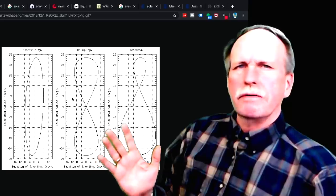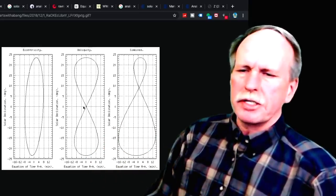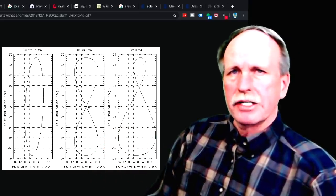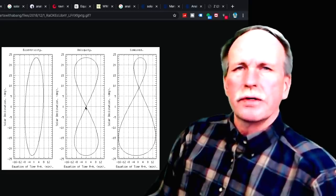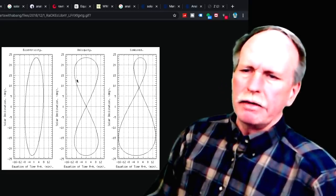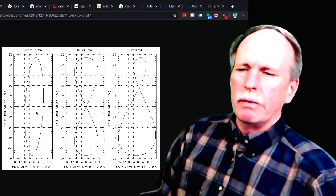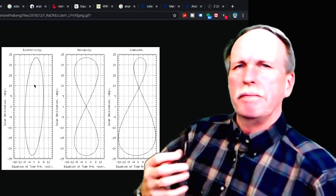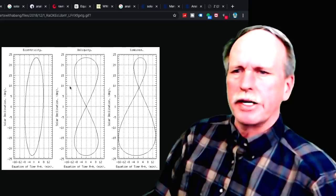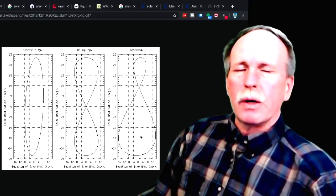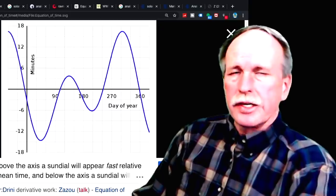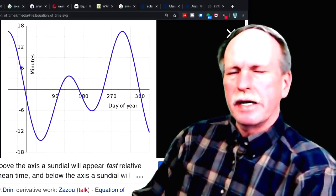This forms a sine wave where the Earth speeds up and then it slows down again. Now this occurs over a 12-month period as opposed to the one from the axial tilt, which occurs over a six-month period. So we get the figure 8 from the axial tilt, and when you combine the orbital speed based on where we are in the elliptical orbit, that is what deforms this figure 8. So this tracing right here is called the equation of time.